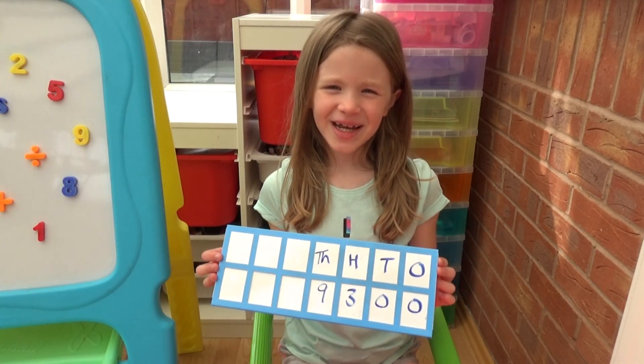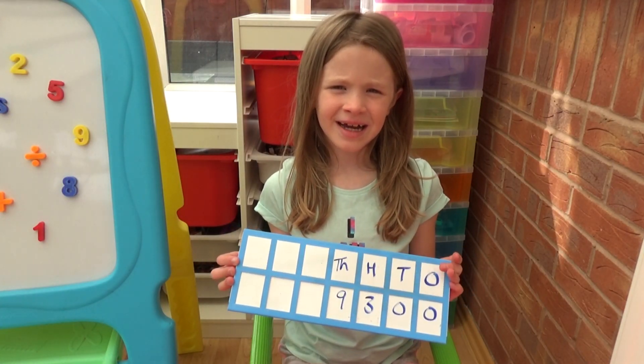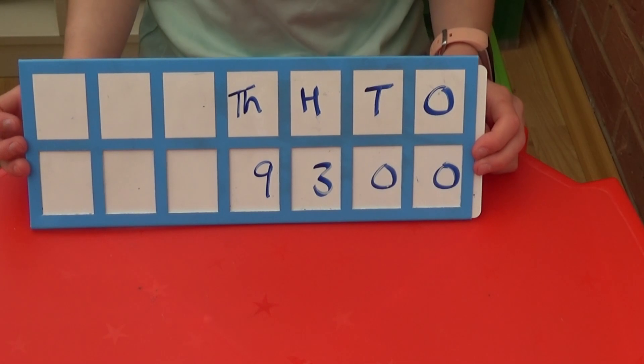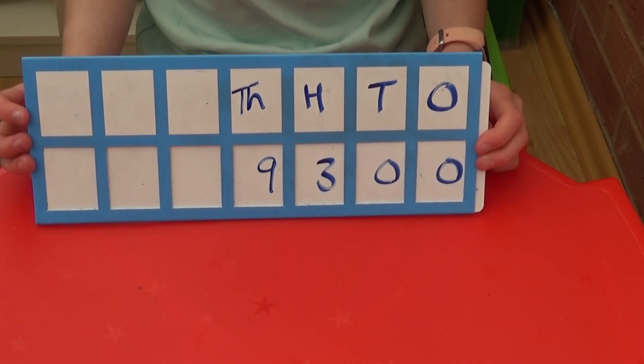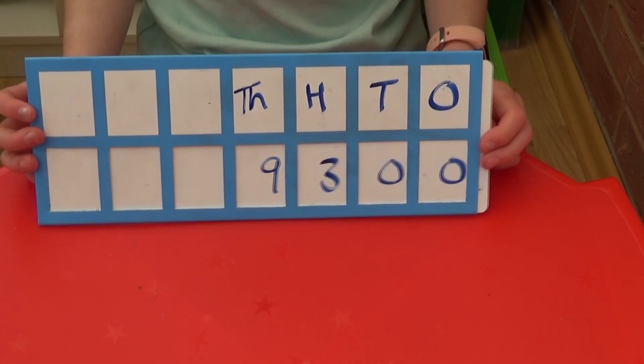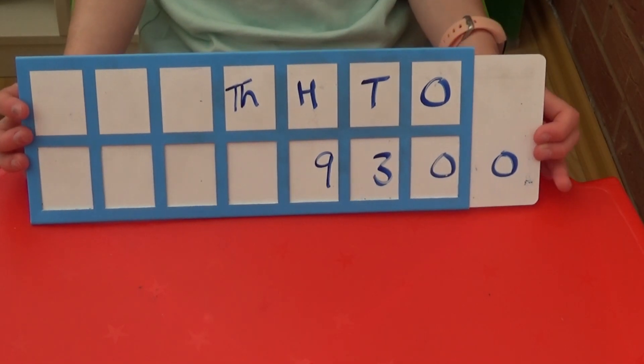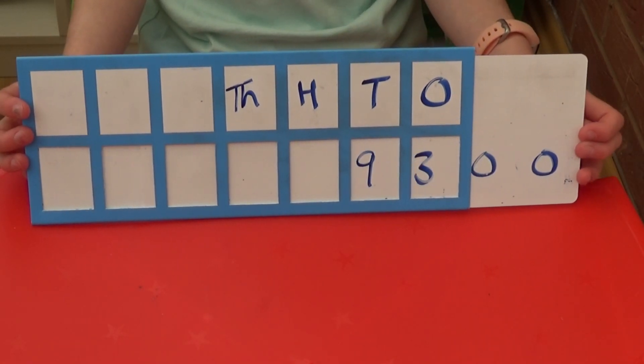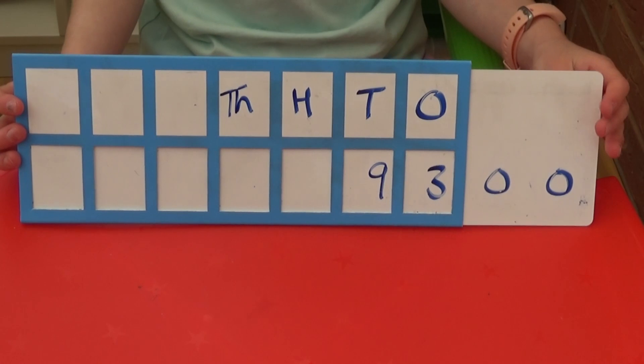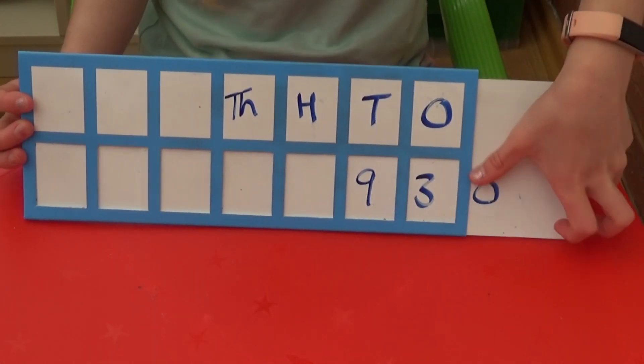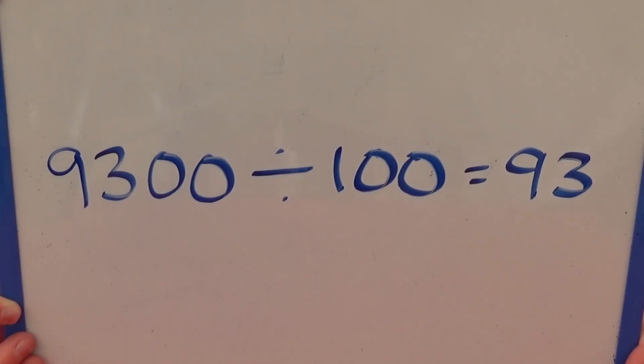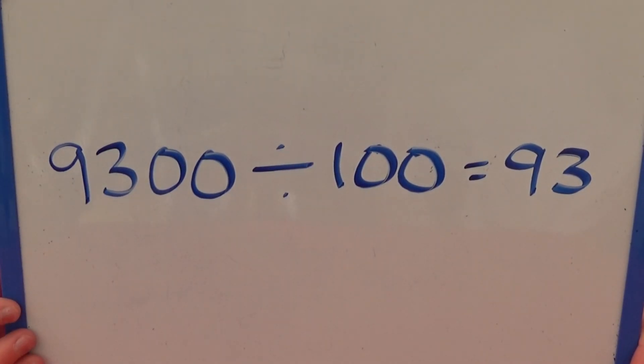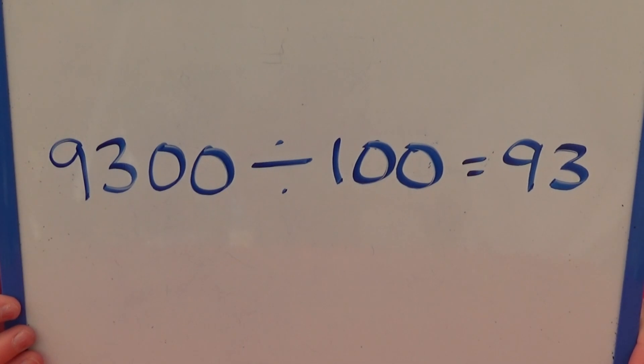We can also show this by using a place value slider. I have written 9300 in the thousands, hundreds, tens and ones columns. As we are dividing by 100, we need to pull the slider two columns to the right. And then I need to remove both zeros. We can see from both of these that 9300 divided by 100 equals 93.